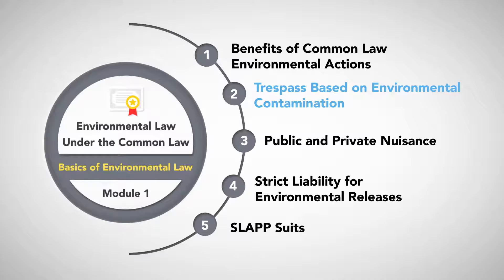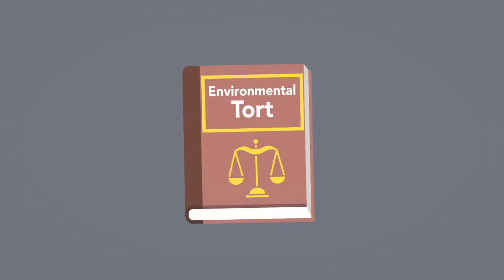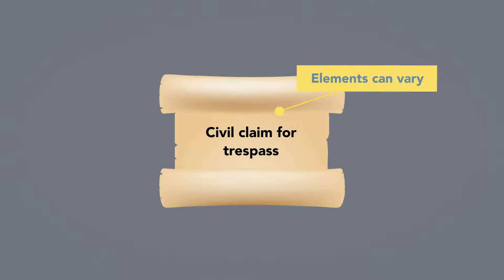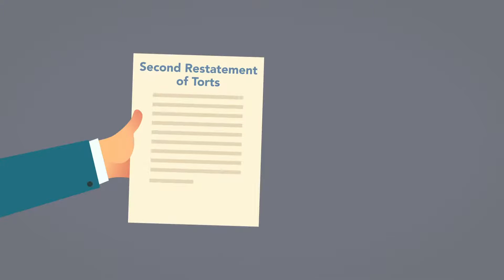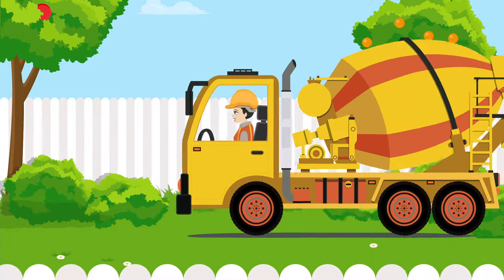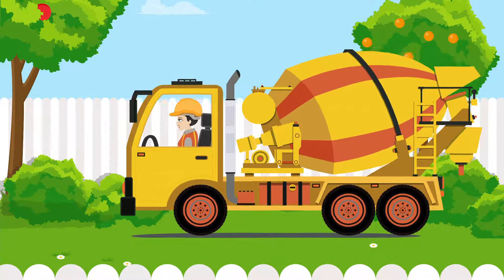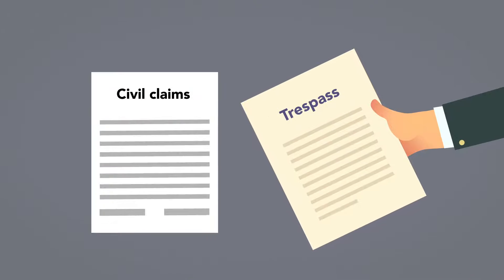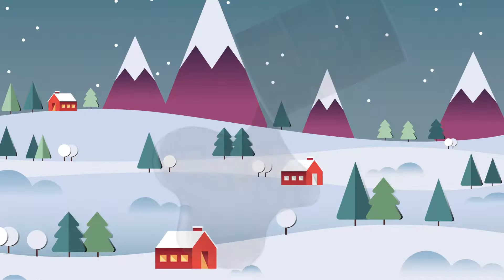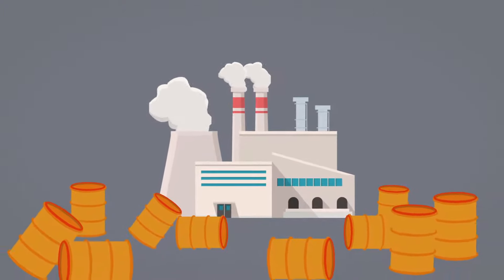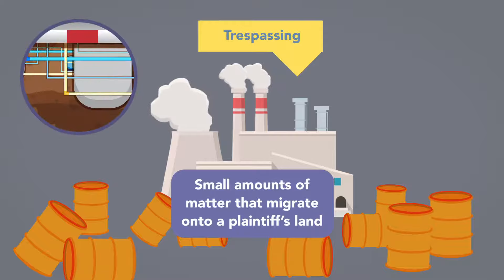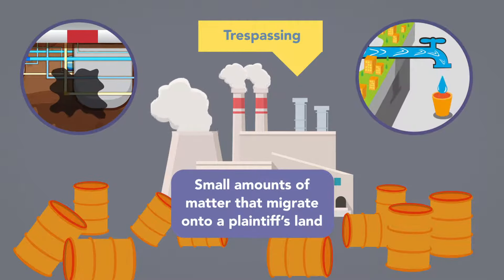Trespass based on environmental contamination. Some of the most significant environmental torts under the common law are brought based on theories of trespass. The elements that make up a civil claim for trespass can vary, but its origins are in the common law. Under the Second Restatement of Torts, a uniform guideline on common law causes of action, trespass means entering land possessed by another person or causing a third party to do so. If a person or object remains on the land despite the culprit's duty to remove it, there is a trespass under the common law. Trespass is a useful environmental tort because civil claims can be based on the unlawful intrusion of objects onto a person's land. Historically, courts have recognized that environmental pollution can qualify as trespassing. These include small amounts of matter that migrate onto a plaintiff's land, such as gasoline that leaks from underground storage tanks on neighboring properties or small lead deposits emitted from nearby factories.